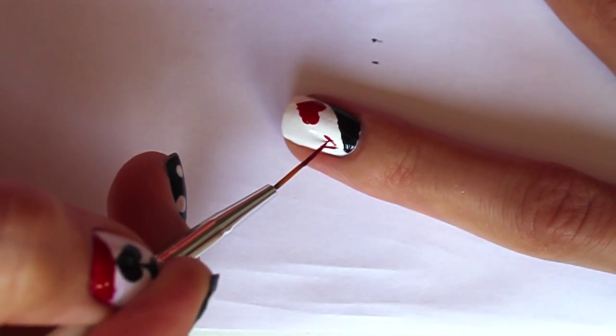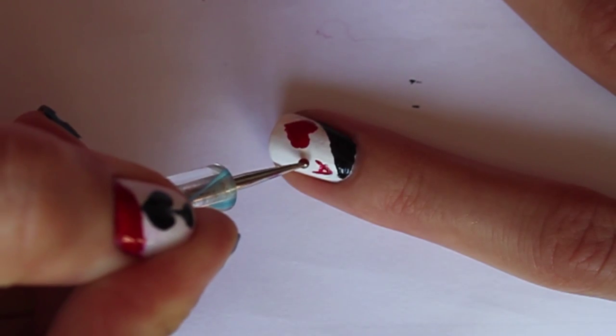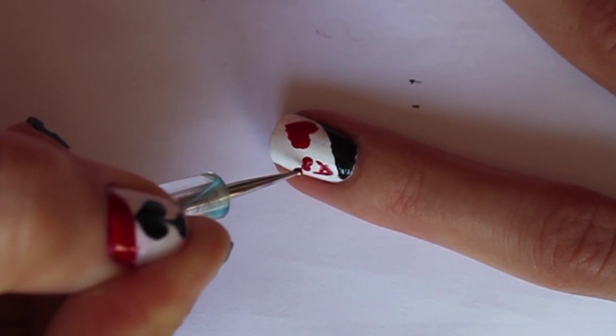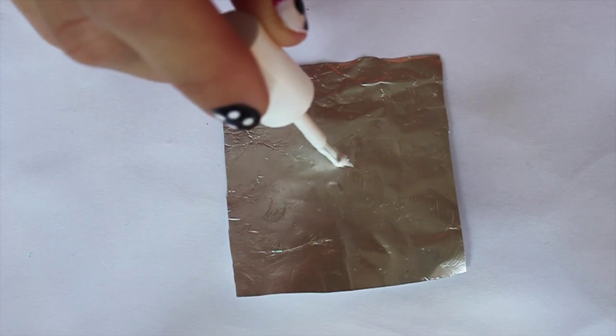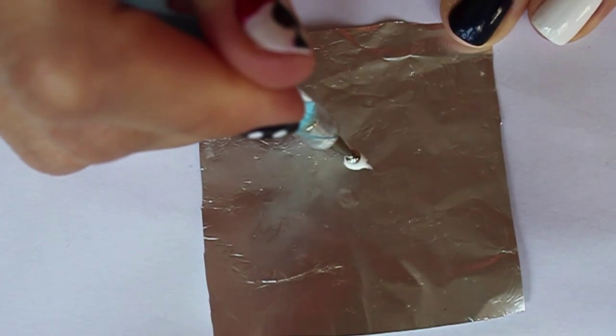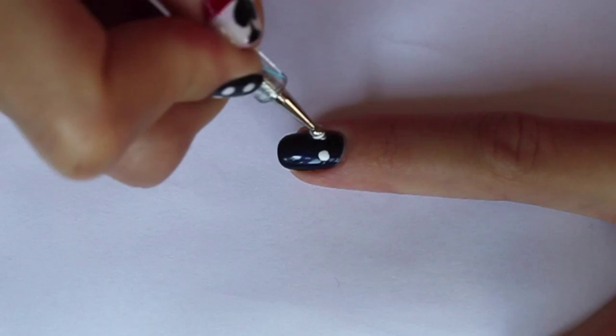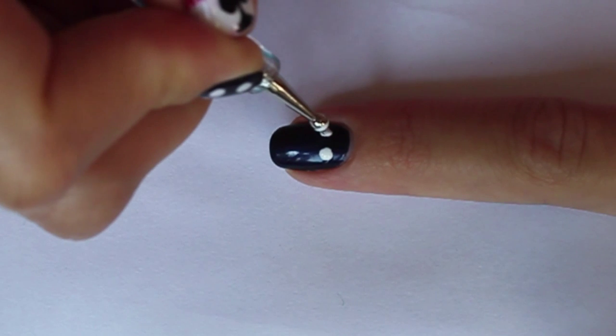Add a small heart below with another tip of the dotting tool and red polish. Drop white polish onto a piece of foil, dip a big dotting tool into it, and create four dots on the index finger. It should look like dice.